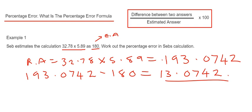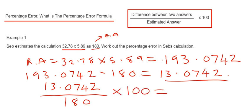We've got our difference, which is 13.0742, and we divide that by the estimated answer, which is 180, and then we times by 100. Just work this out on your calculator.